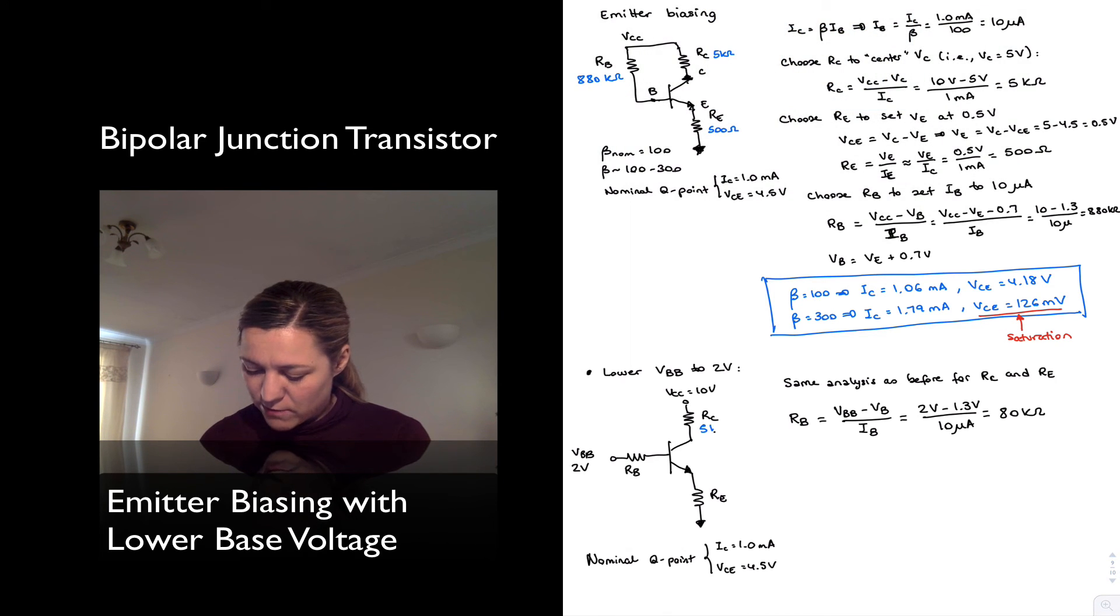So I now have 5 kilo ohms for Rc, 500 ohms for Re, but I've changed my base resistor to 80 kilo ohms, as well as my base supply.